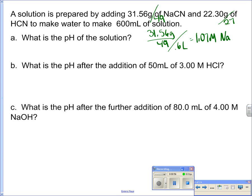I'm going to do the same thing for the HCN, so I have 22.3 grams, divided by the molar mass of HCN, which is 27, divided by 0.6, and this gets me 1.38 molarity of the HCN.